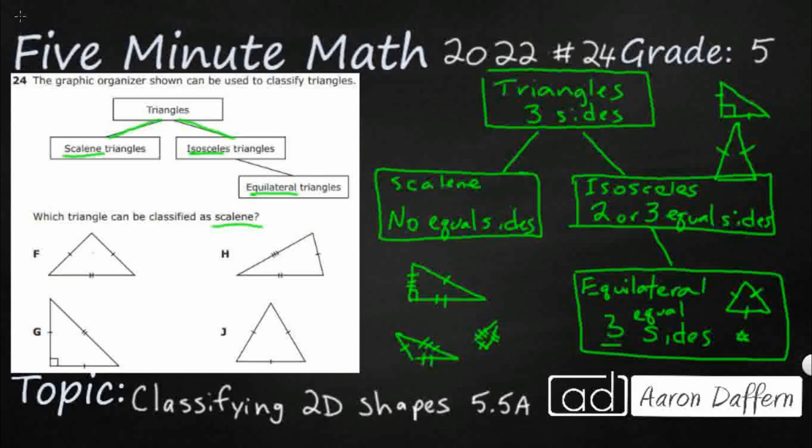And so you see that this is an isosceles, because it's got these two sides the same. So is this, because that's got those two sides the same. This is an equilateral, because it's got all three sides the same. Right there, and so you're looking at H. You see the three separate hash marks, one, two, three. That's our scalene.